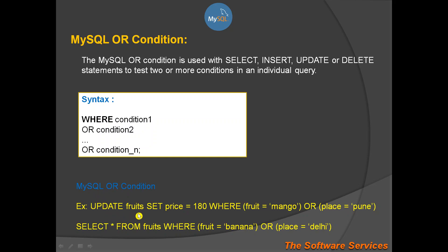In this case, we have an example. In the same example, we have just OR. Now let's check the query output result. Let's check: UPDATE fruits, SET price equal to 180, WHERE fruit mango is not —